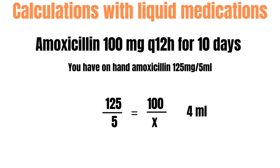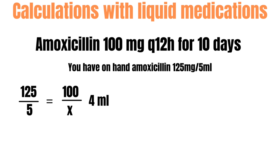So we set up the proportion: 125 mg over 5 mL equals 100 mg over x. Cross-multiplying gives us 100 times 5 divided by 125, which equals 4 mL per dose. Now that we know the per-dose volume, we need to find the total mLs and the correct bottle size.